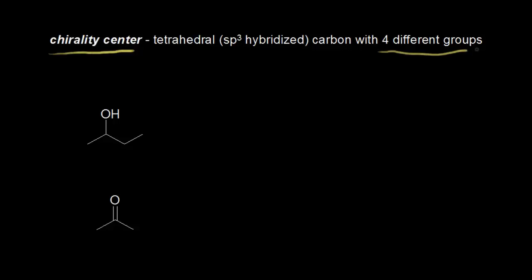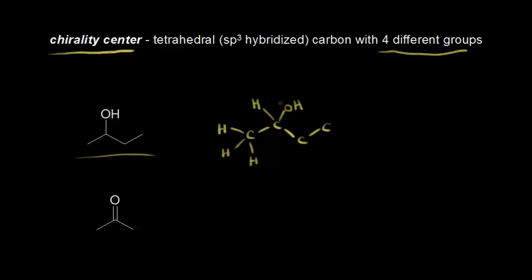Let's look for some chirality centers in these molecules. We'll start with this alcohol. I'm going to redraw this and draw out all of the atoms. We have four carbons. The carbon on the left has three hydrogens attached to it, so there's no way that's a chirality center — I need four different groups, and I have three of the same thing. This next carbon has an OH and a hydrogen attached to it, and this is a chirality center. I'll go ahead and mark this carbon right here.